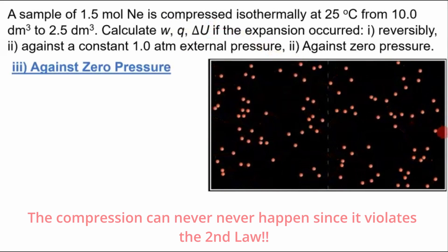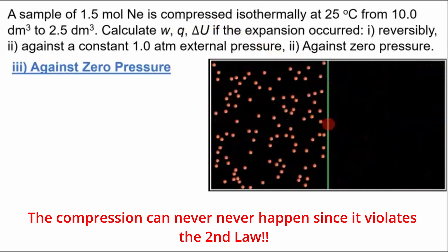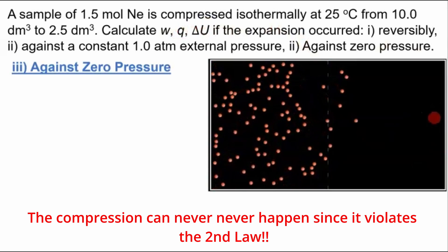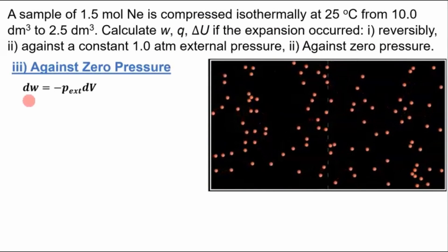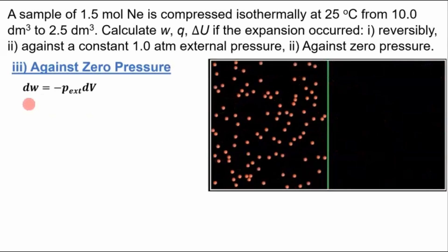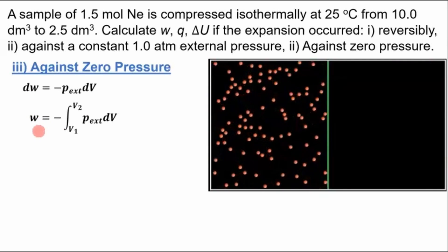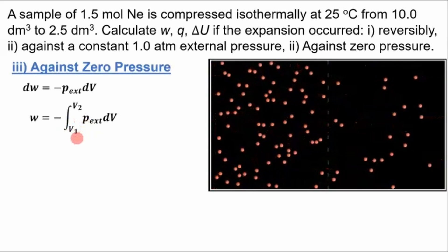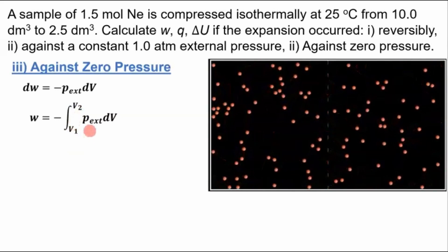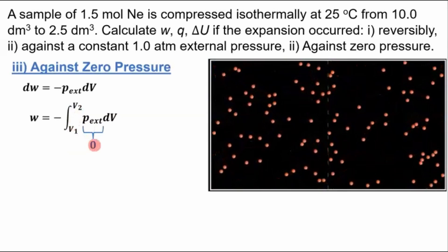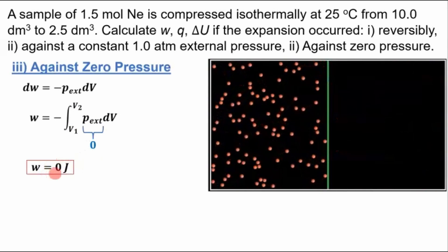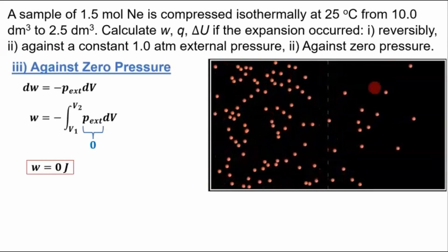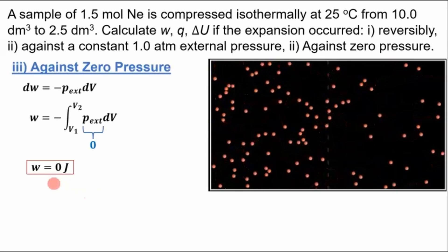Compression against zero pressure would be the opposite of this. And I don't know who writes these exam problems, but that would violate the second law of thermodynamics. But anyways, this is our equation for work in differential form. If we integrate both sides, we have work equals negative the integral of the external pressure dV from the initial to final volume. This external pressure, that's zero. So if we plug that in, that means work is zero. So the system does no work. It doesn't do any work because it doesn't have to push against anything in order to expand.